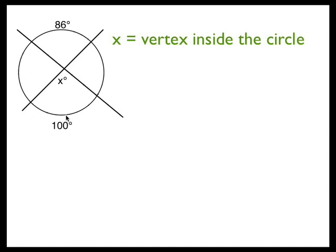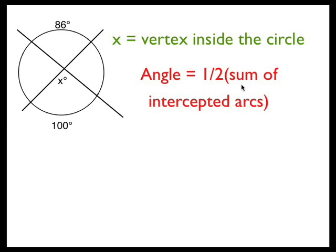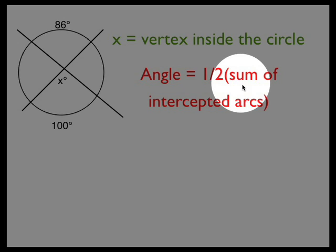First off, our vertex is inside the circle. According to the rule, the angle is half the sum of the intercepted arcs.